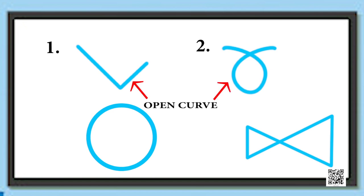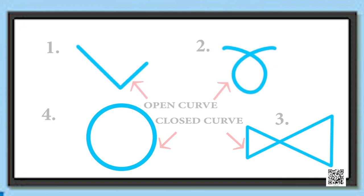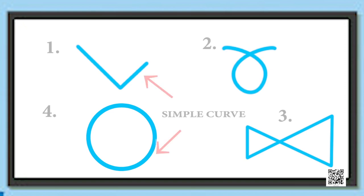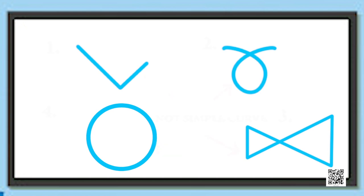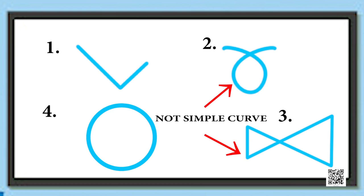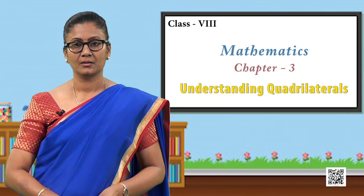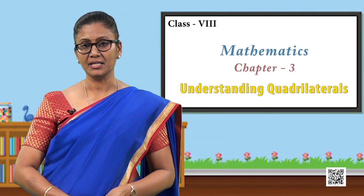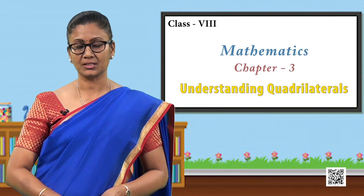The first two are open curves and the other two are closed. Also the first and the fourth are simple curves, whereas the other two are not simple — because there is an overlap in their boundaries. Today our focus will be only on the simple closed curves.